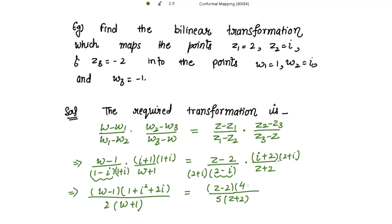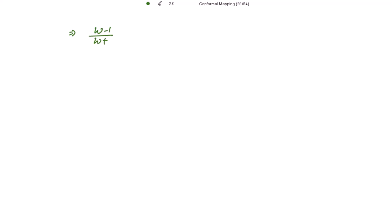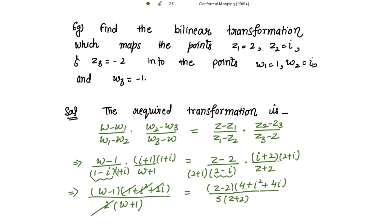Opening 2 plus iota whole squared gives 4 plus iota squared plus 4 iota. Since iota squared equals negative 1, the iota squared terms cancel, giving 2 iota. The 2 cancels, leaving w minus 1 over w plus 1 times iota on the left. This equals z minus 2 over 5 times z plus 2, times 3 plus 4 iota. Taking iota common from 3 plus 4 iota gives 3 over iota plus 4, and multiplying and dividing by iota gives 4 minus 3 iota.